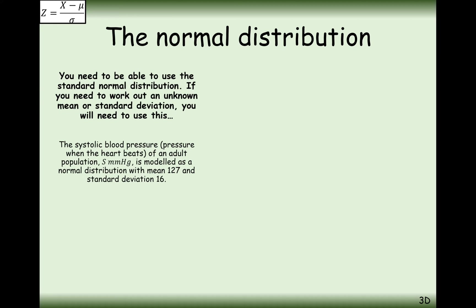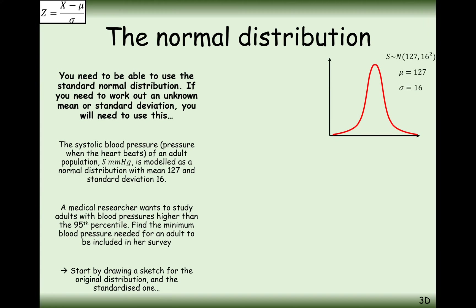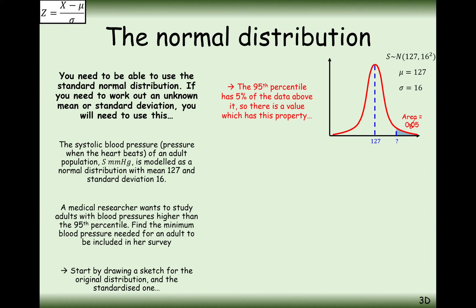Let's look at how we might use that percentage points table in a question — this is probably more likely the type of question you'll be asked in the exam. The systolic blood pressure of an adult population, measured in mmHg, is modelled as a normal distribution with a mean of 127 and a standard deviation of 16. A medical researcher wants to find adults with blood pressure higher than the 95th percentile. Find the minimum blood pressure needed for an adult to be included in her survey. Start by drawing a sketch — what you want to find is the value that gives you 0.05 on the right-hand side area. We've got that inverse normal distribution function on the calculator, but let me show you how to do it without that mode.